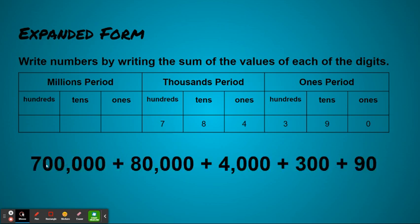So my 7 is in the 100,000s, so I'd have 700,000 plus my 8 is in the 10,000s, so I'd have 80,000 plus 4,000 plus 300 plus 90. Again, if I have a zero in any of those place values, I would just leave it blank. I do not need to write a zero. If it's helpful for you, just so you don't get confused with the place value that they're in, you could add all zeros, but it's not necessary.